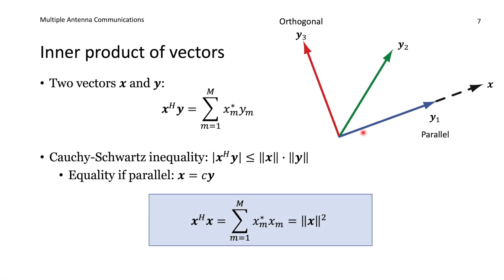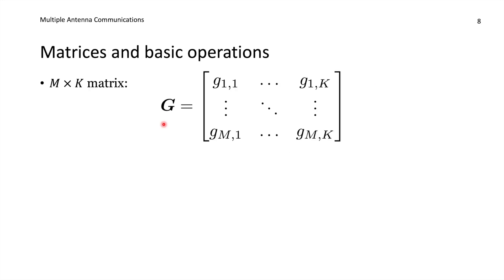If we take the inner product of x with itself, we get the summation over xm conjugate times xm, which is the absolute value squared — and this equals the norm of x squared. This way of computing the squared length of a vector resembles how we computed the length of a complex number by multiplying it by its conjugate. A vector is a matrix with just one column.